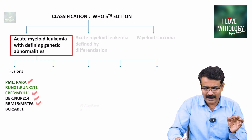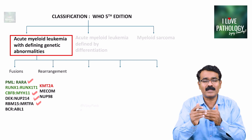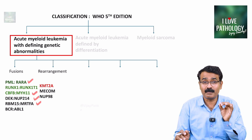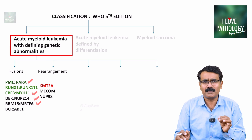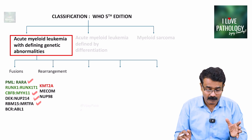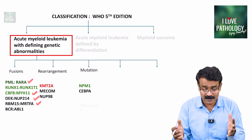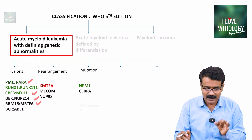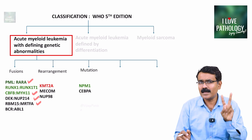The second important genetic abnormality is rearrangements. KMT2A rearrangement — if the patient has this, they will fare very badly; it has a worse prognosis. Second rearrangements could be MECOM and NUP98 rearrangements. The third category is mutations — NPM1 mutation, which has a very good prognosis, and CEBPA mutations. So remember: fusion, rearrangement, and mutation.